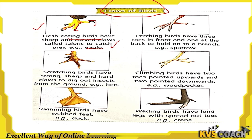Perching birds have three toes in front and one at the back to hold onto a branch. An example is the sparrow, which uses this type of claw for holding branches of the tree.